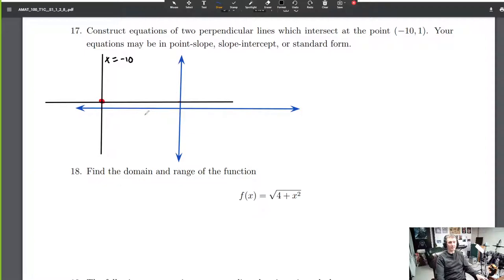That's a vertical line that crosses the x-axis at negative 10. It definitely goes through the point negative 10, 1. And this one is y equals 1. Okay, these are both in standard form. So these two equations work. x equals negative 10, y equals 1. We're done.